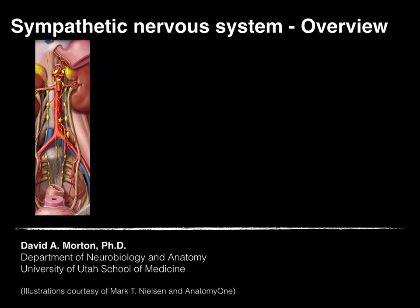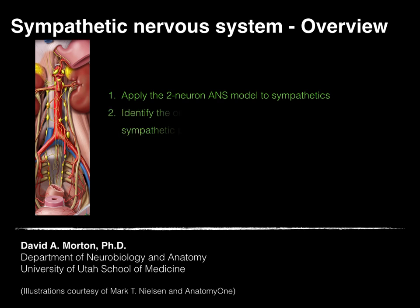Let's talk about the sympathetic nervous system and give an overview. Our objectives are: one, apply the two-neuron autonomic nervous system model to sympathetics, and two, identify the origin of preganglionic and postganglionic sympathetic pathways.